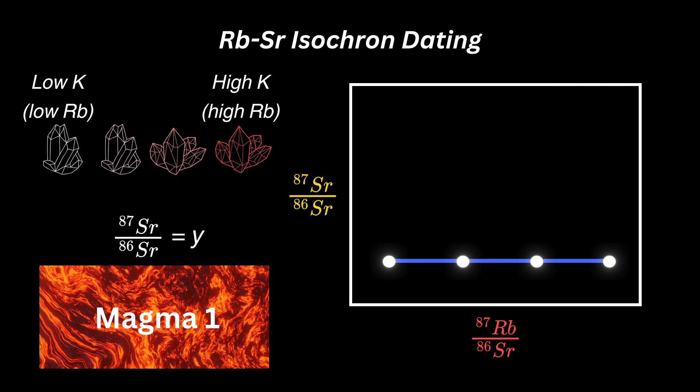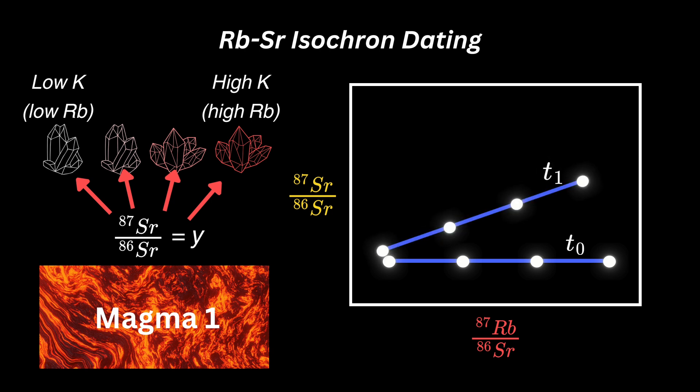Rubidium-strontium dating is performed using the isochron method, which is valid when a well-mixed magma with a given 87-86 strontium ratio solidifies into minerals that have a wide range of rubidium concentrations. Because rubidium replaces potassium in the crystal lattice, it is higher in minerals that naturally contain a lot of potassium, like alkali feldspars, and lower in minerals that don't. However, the 87-86 strontium ratio will be the same in all the minerals at time equals zero. As radioactive decay proceeds, 87 rubidium is lost and 87 strontium is gained, causing each of these points to follow a linear path up and to the left.